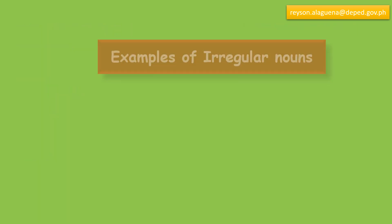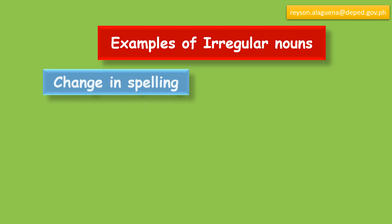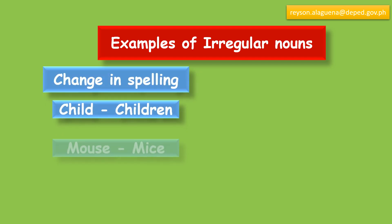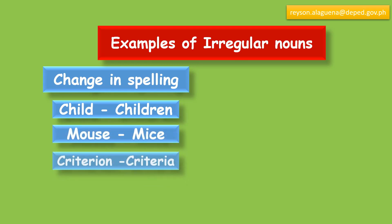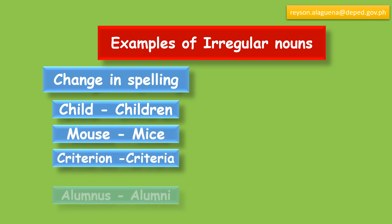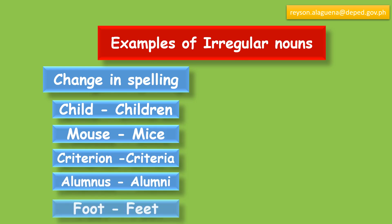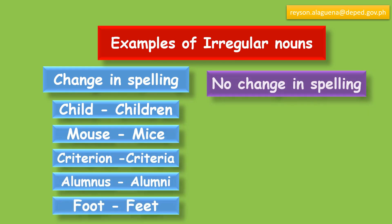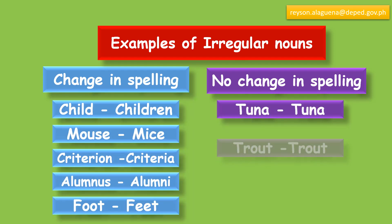To form the plural of irregular nouns — change in spelling: Child becomes Children, Mouse becomes Mice, Criterion becomes Criteria, Alumnus becomes Alumni, Foot becomes Feet.